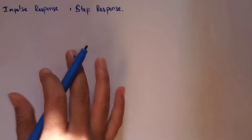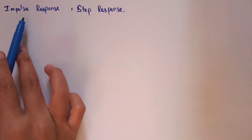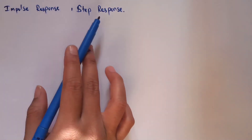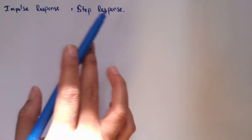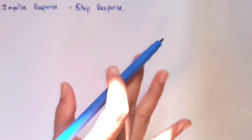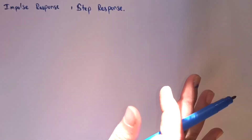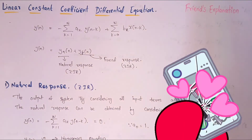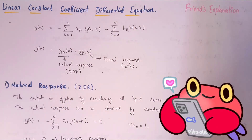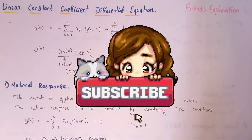In exams they also ask for impulse response and step response. Impulse response means input is considered as delta(n), and step response means input is u(n). I will solve questions on these concepts and post those videos in this playlist — don't forget to check them. That's it for this video. If you liked it and understood everything, please click the like button and subscribe to the channel.